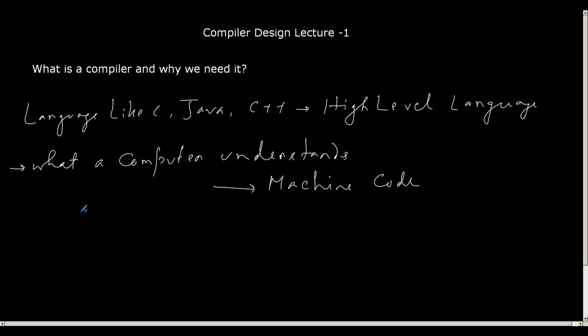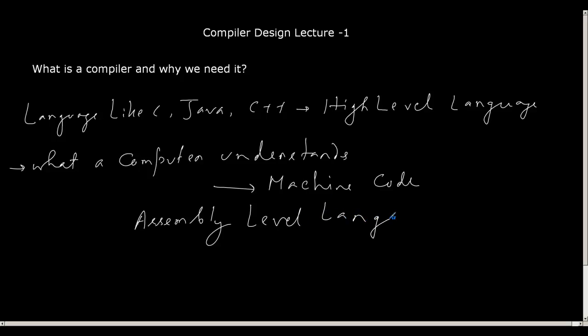It is totally impossible to write your thoughts in terms of zeros and ones. You cannot write that small C program that adds two variables A and B and stores it in another variable C in terms of zeros and ones. So there is another intermediate language which is just one level up the machine code, and that is called assembly language — assembly level language.